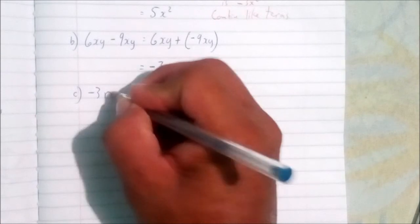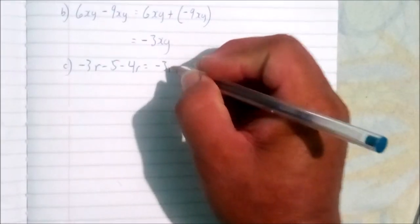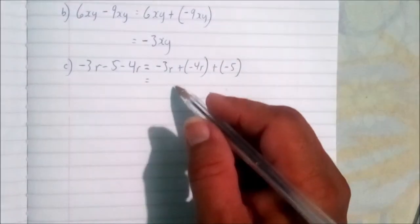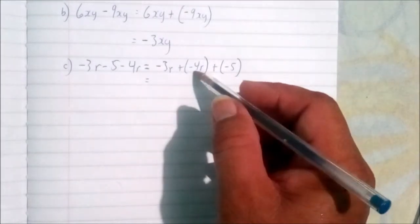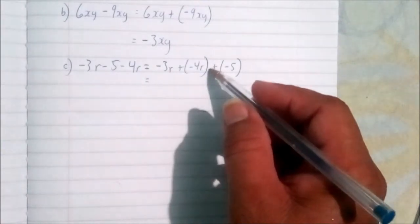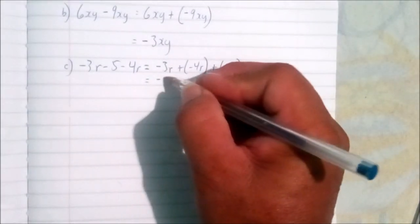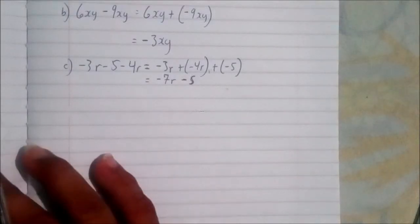Next example: negative 3r minus 5 minus 4r. We combine like terms by bringing them together: negative 3r plus negative 4r plus negative 5. Both r-terms are negative, so we keep the negative sign and add three and four to get seven. Our answer is negative 7r minus 5.